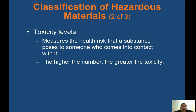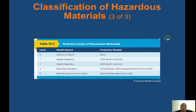Toxicity levels measure the health risks a substance poses to someone who comes into contact with it — the higher the number, the greater the toxicity. Level 4 is extreme: minimal exposure causes death and special HAZMAT gear is needed.